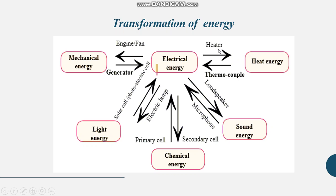Electrical to heat energy examples are heater, geyser, and iron — electricity passes and that is electrical to heat conversion. Heat to electrical conversion is a thermocouple. Electrical to sound example is a loudspeaker, and sound to electricity is a microphone. Electrical to chemical and chemical to electrical — all these examples you have to learn by heart.